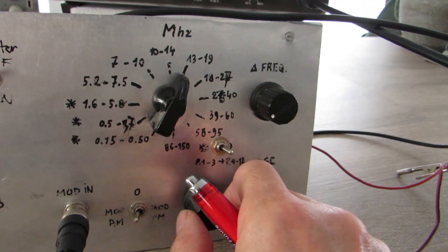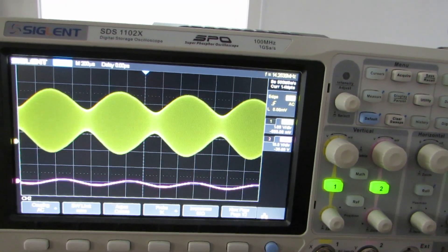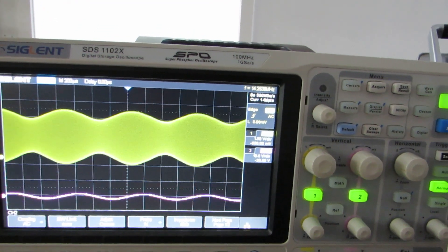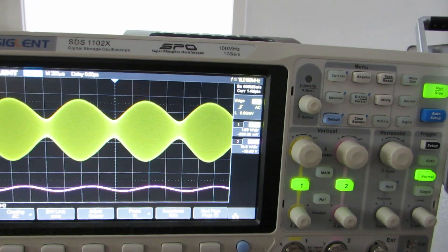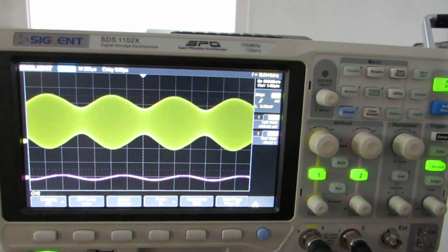With this knob I choose the modulation depth as you can see. At the bottom of the screen you see the 1kHz signal from my generator.